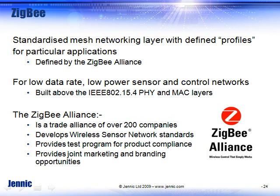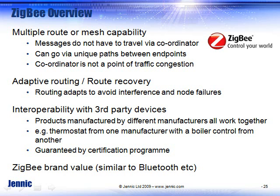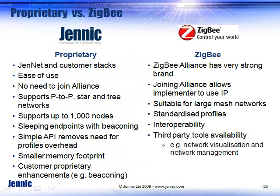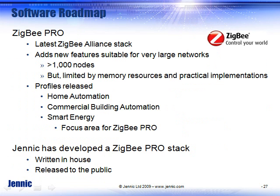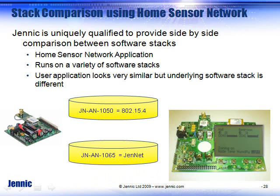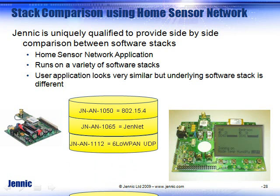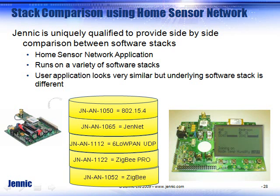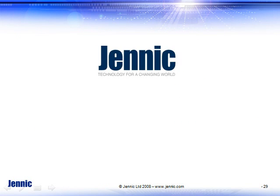ZigBee has an alliance of several customers and end users — semiconductor companies are all members of the alliance, and Genic has been a member for a very long time. It's a brand name similar to Bluetooth that allows interoperable devices. ZigBee Pro has certainly proven that in several applications, including smart metering. One of the differentiators for Genic is that we offer all software stacks on our device, allowing you to take a user application like a home sensor network and try running it on different stacks to see what the user experience and network operation is. We're the only vendor that can give you this kind of flexibility, and we're always available to help you pick the right software stack. Thank you very much.